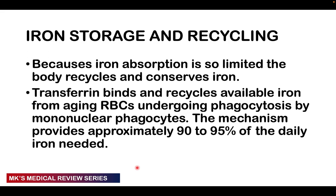Because iron absorption is limited, the body recycles iron. This makes iron overload easy, especially in males who have few mechanisms for iron excretion, and in patients receiving repeated transfusions. Transferrin binds and recycles iron from aging red blood cells undergoing phagocytosis by mononuclear phagocytes. This recycling mechanism accounts for about 90–95% of the daily iron needed.